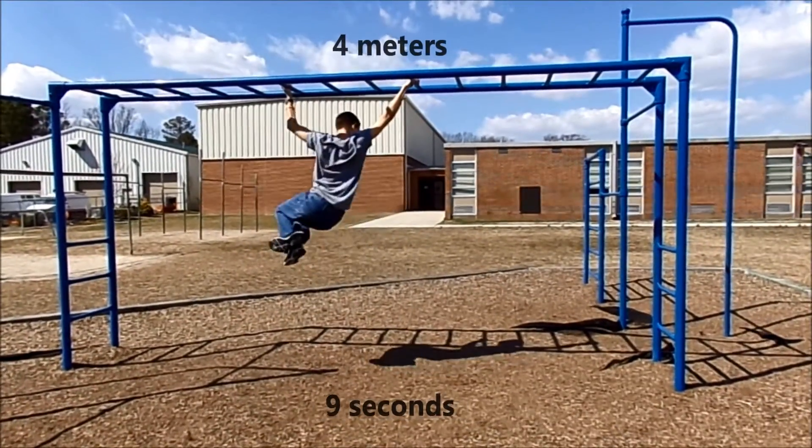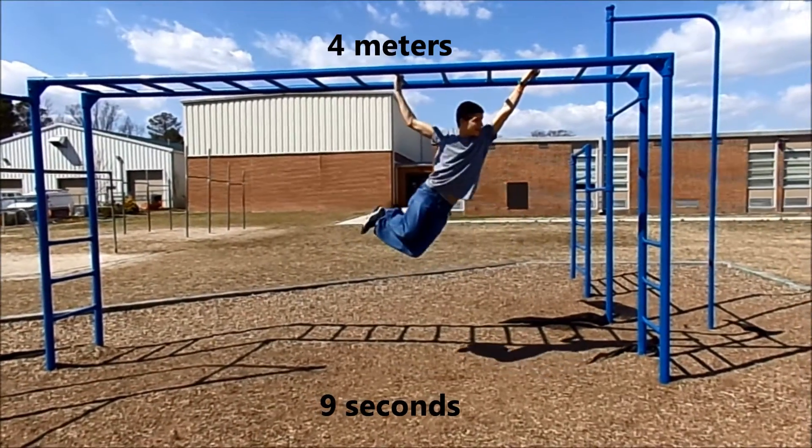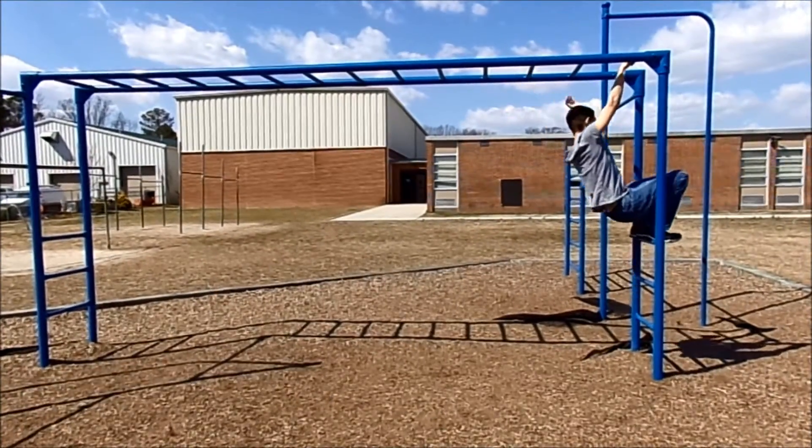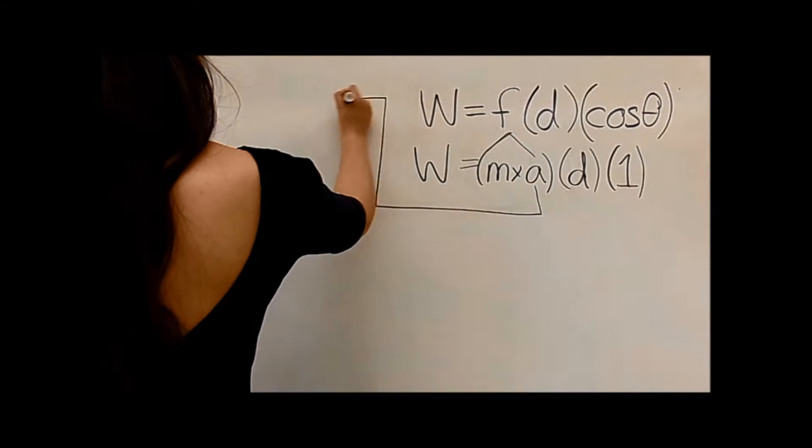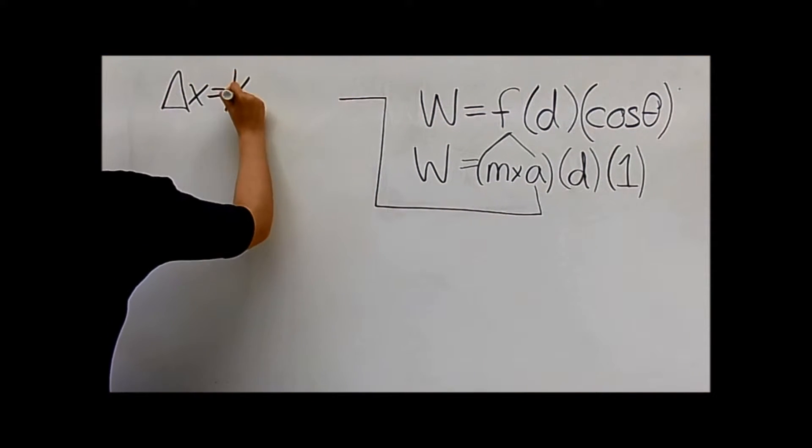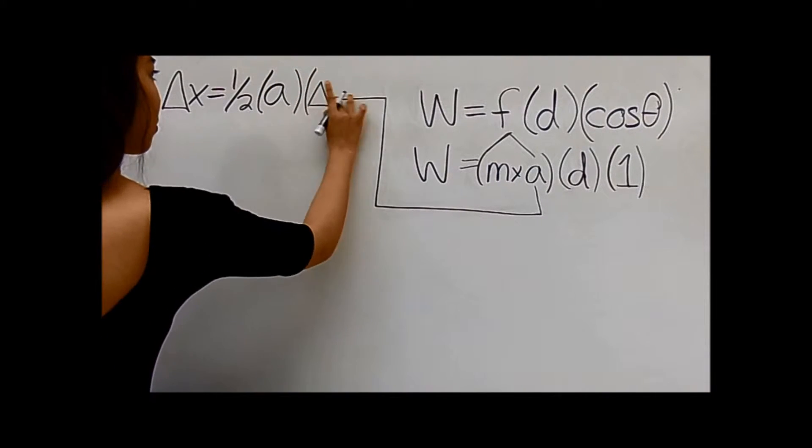Connor traveled four meters across the monkey bars in nine seconds. Acceleration is defined by distance over time squared. To find Connor's acceleration, we derive the equation for the change in distance.